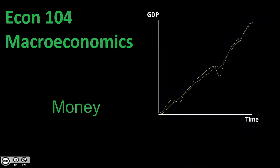Welcome back to Econ 104, Introduction to Macroeconomics. In this video, we're going to be taking a look at money. We've been discussing a lot about GDP, about our aggregate demand and aggregate supply model. We're going to be taking a step away from that for a while, focusing on money, bonds, banks, and this whole financial side of the economy. Then we're going to bring it all back to our aggregate demand and aggregate supply diagram.